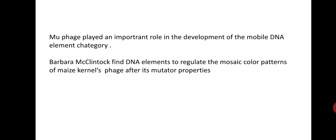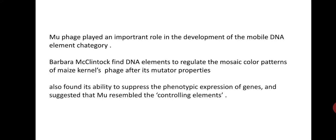Barbara McClintock found DNA elements that regulate the mosaic color patterns of maize kernels. The phage mu is named after its mutator properties. She also found its ability to suppress the phenotypic expression of genes and suggested that mu resembles the controlling elements found in maize — the Ac and Ds elements, as discussed in the previous lecture.